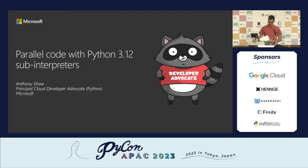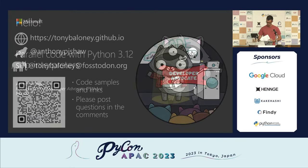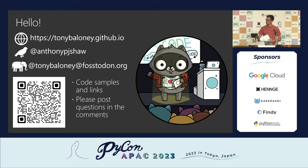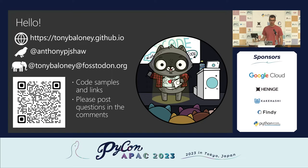Before we get into the talk, a couple of things about me. A few links — that's my website where my blog is, links to talks I've done previously and stuff like that. I'm on Twitter, Anthony P.J. Shaw. I'm also on Mastodon on the Fostodon instance. That QR code, which will be on the last slide of this talk as well, has some links as well as copies of the code snippets that I'm going to show during this talk.